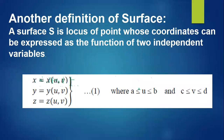Another definition: a surface S is a locus of a point whose coordinates can be expressed as functions of two independent variables. We use u and v as two variables. In three-dimensional space, x = x(u,v), y = y(u,v), and z = z(u,v), called equation (1), with conditions a ≤ u ≤ b and c ≤ v ≤ t.